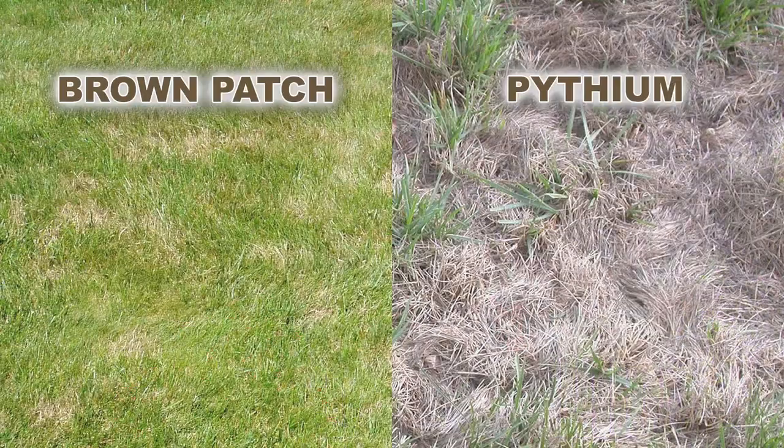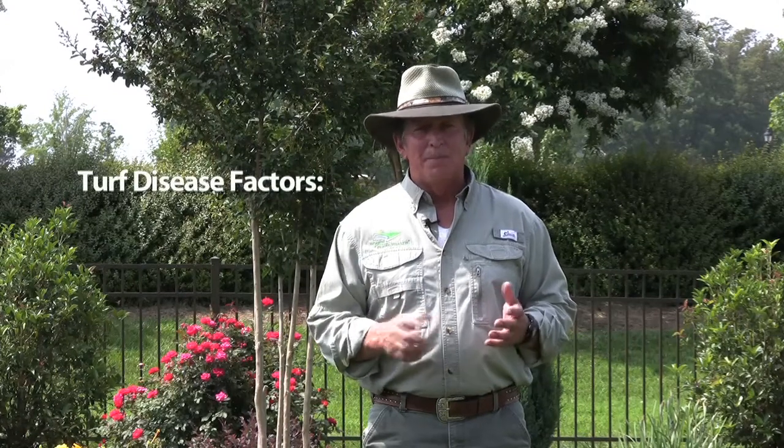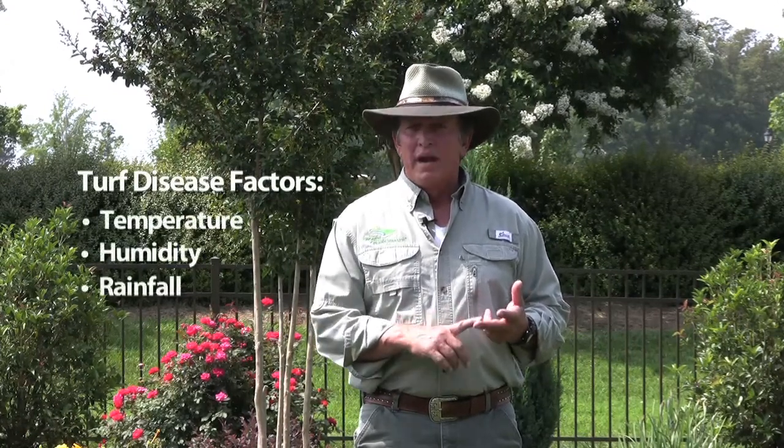We're going to talk about disease in fescue lawns today as well as warm season, but right now we're on this fescue lawn. Some of the things that will affect it during the hot summer months are brown patch and pythium. There are a couple of different reasons these occur in your landscape — temperature, afternoon humidity, rain, and irrigation all contribute to the outbreak of these diseases.